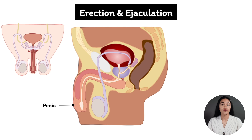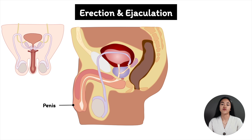In this video, we're going to cover erection and ejaculation. We're going to break down the anatomy of the penis, the neuroanatomy, and physiology of erection, and how ejaculation occurs.